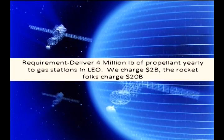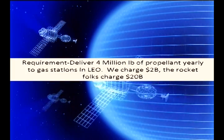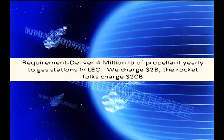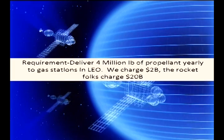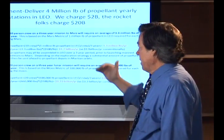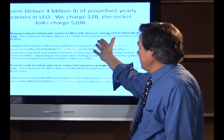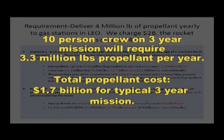Here's a requirement. We want to launch 4 million pounds of propellant yearly to gas stations in LEO. And we charge $2 billion. The rocket folks charge $20 billion. These are conservative numbers. And so I give a couple examples here. One is for a Mars expedition where it would cost, in our case, $1.7 billion per year. We're amortizing over three years, because these are typically multi-year missions. And the same thing is done for the Moon. And the bottom line is you can afford it, whereas before you could not.